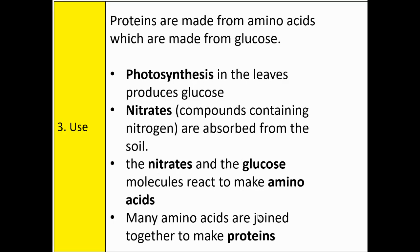More on protein synthesis: proteins are made from amino acids, which are made from glucose. Photosynthesis in the leaves produces glucose. Nitrates, which are compounds containing nitrogen, are absorbed from the soil. The nitrates and glucose molecules react together to make amino acids, and then many amino acids are joined together to make proteins.